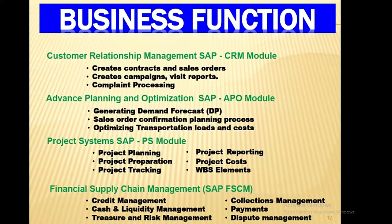SAP CRM Module functions include: creating contracts and sales orders, creating campaigns and visit reports, complaint processing, and generating demand forecasts. SAP APO (Advanced Planning and Optimization) Module covers sales order confirmation, planning process, and optimizing transportation loads and costs. SAP PS (Project Systems) Module handles project planning, preparation, and tracking. SAP FSCM covers Credit Management, Cash and Liquidity Management, Treasury and Risk Management, Collections Management, Payments, and Dispute Management.